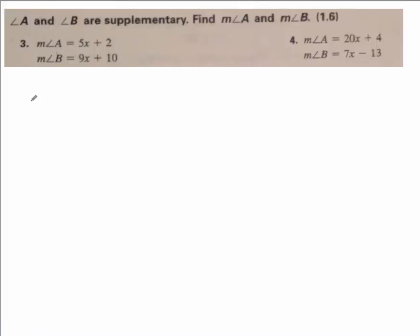Okay, here we have angle A and B are supplementary. That means measure of angle A plus measure of angle B equals 180 degrees. It's another way to write the angle, by the way.